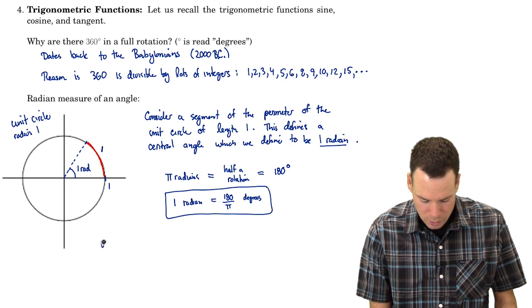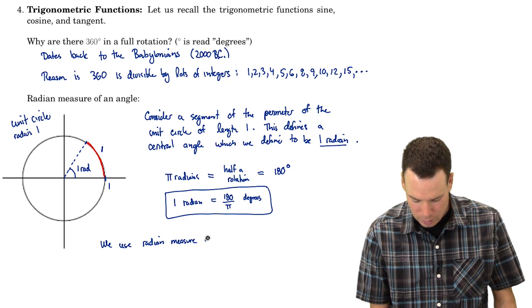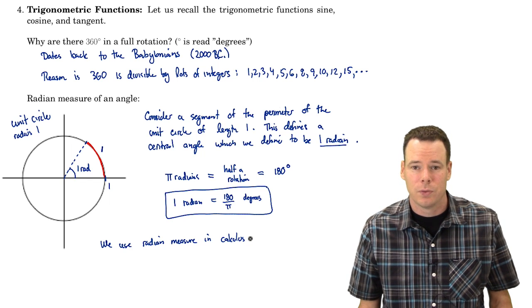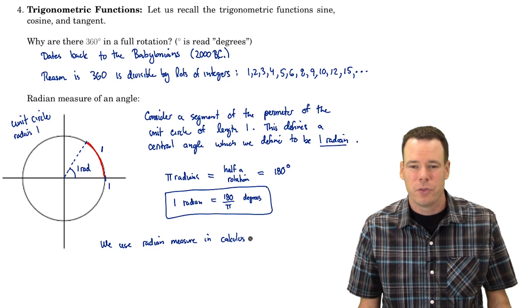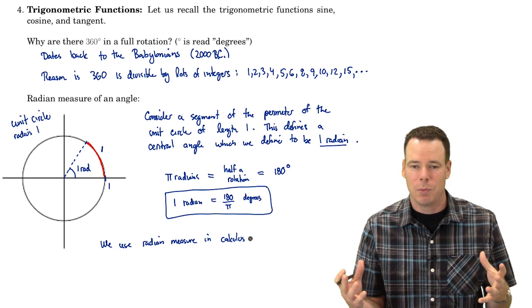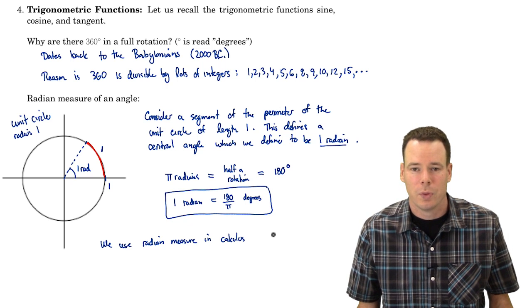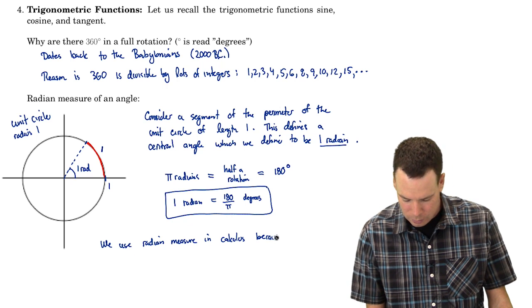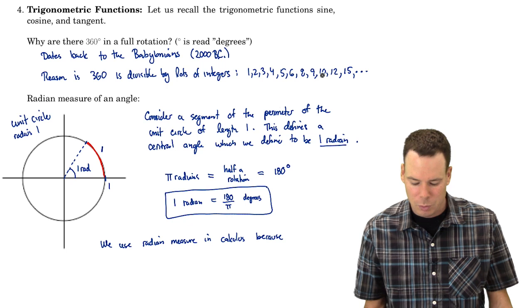Okay, so we use radian measure in calculus. In fact, radian measure is almost exclusively used for angle measure in all of mathematics. We don't really use degrees very much. The only time we'd use degrees is if we take our results and then communicate the answer to someone in more friendly terms. But all our calculations generally involve radian measure. Why is that? We use radian measure in calculus because it's so much more natural. Again, 360 was only chosen because it was divisible by lots of integers.